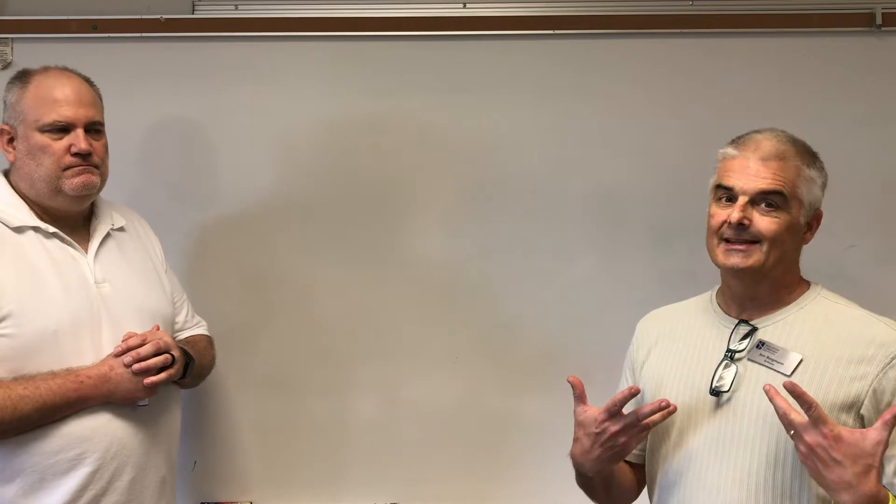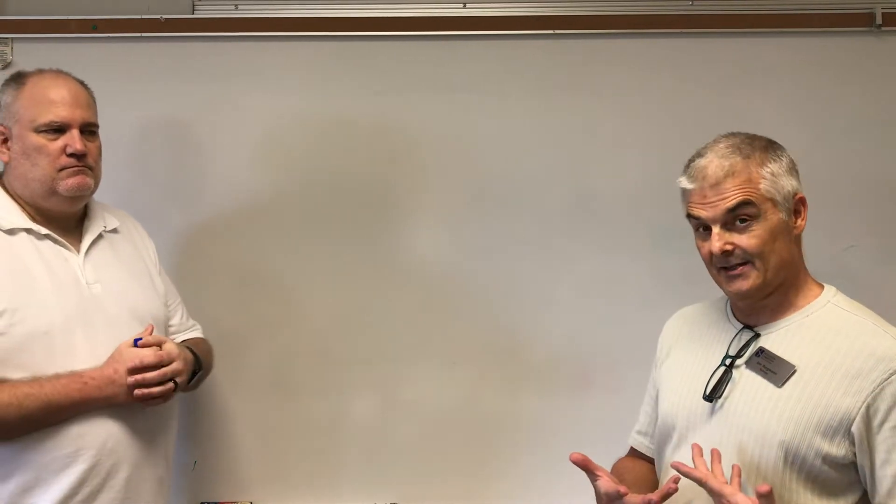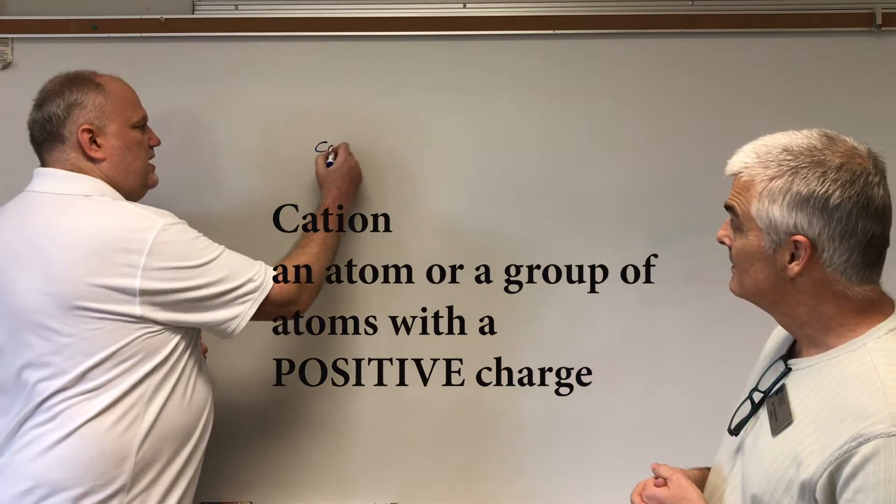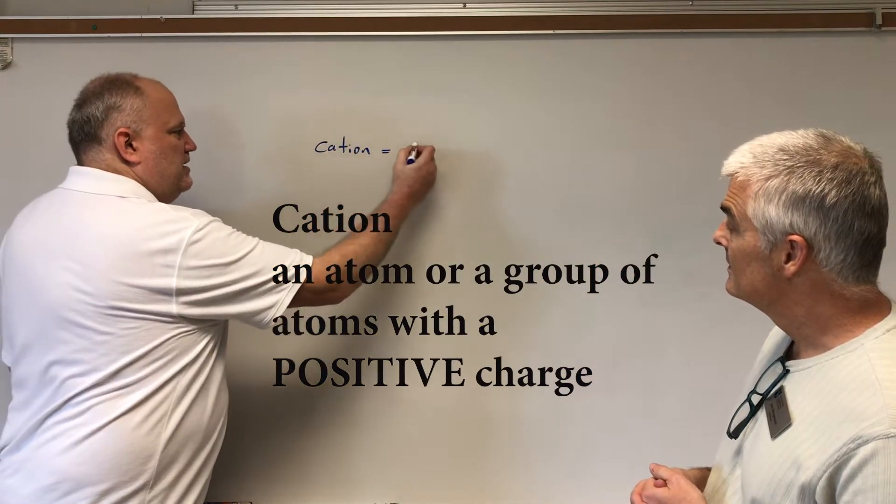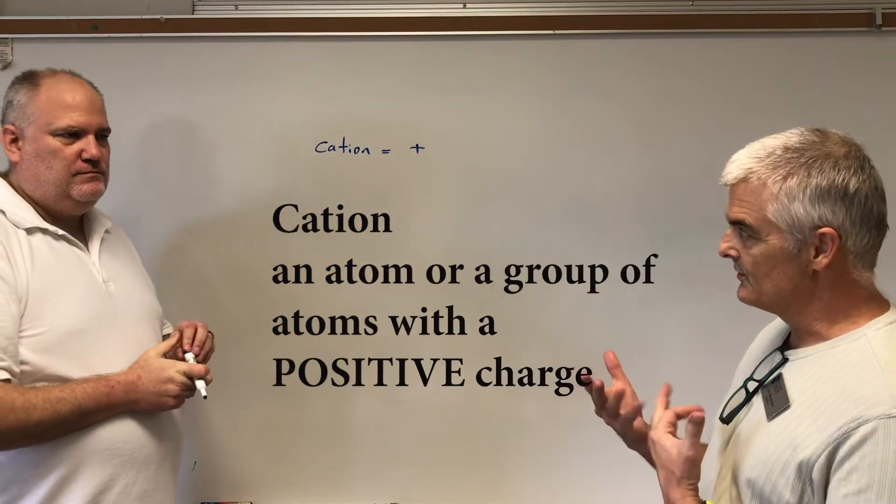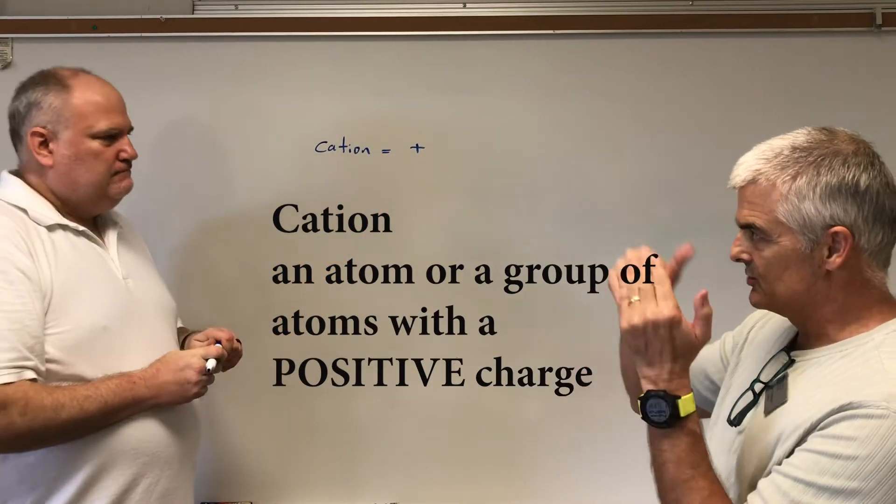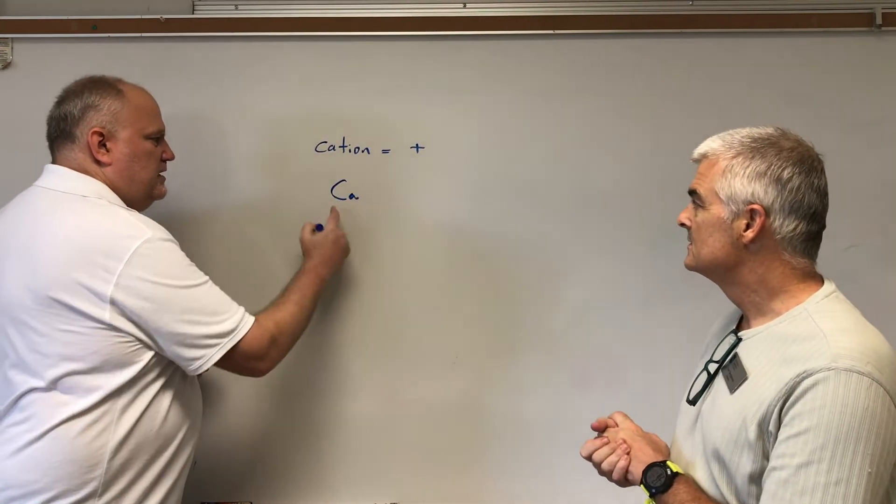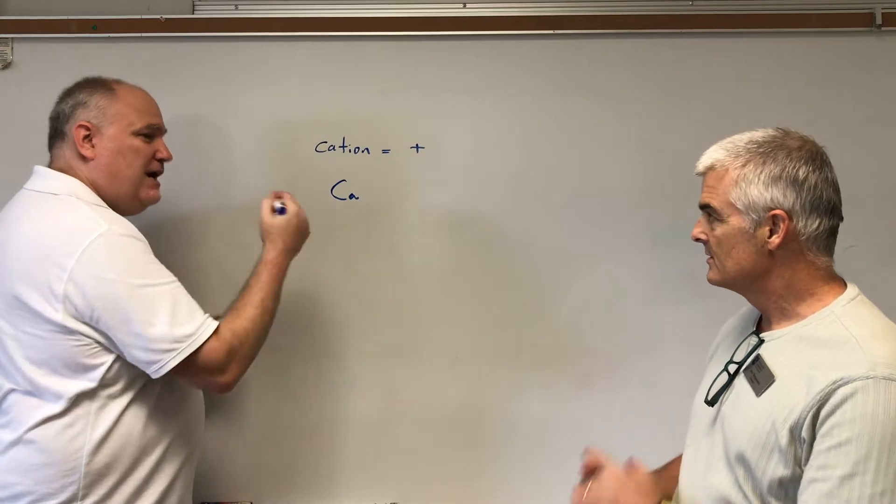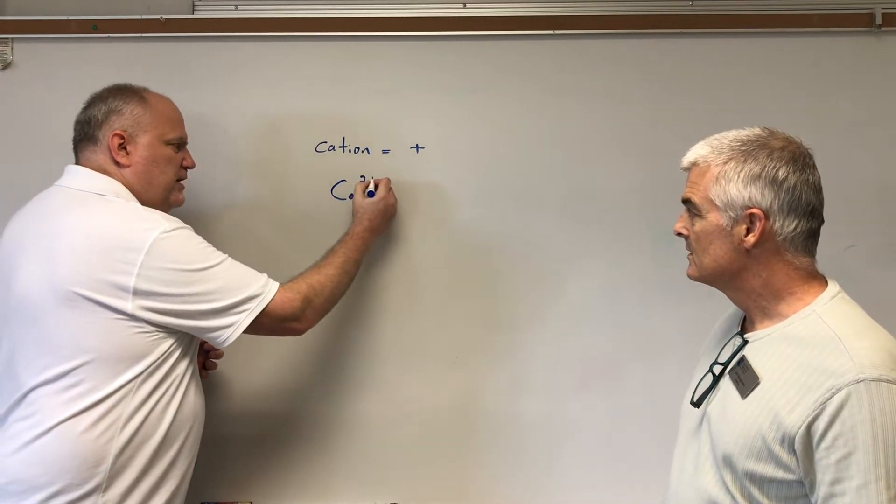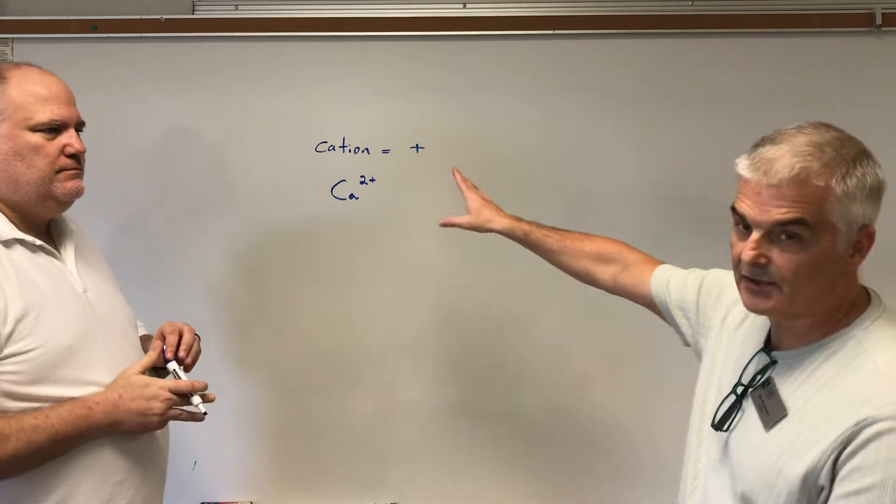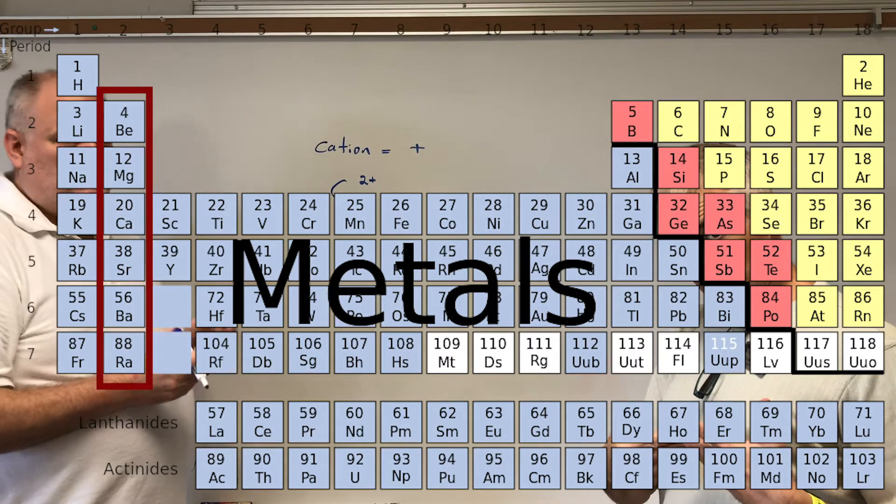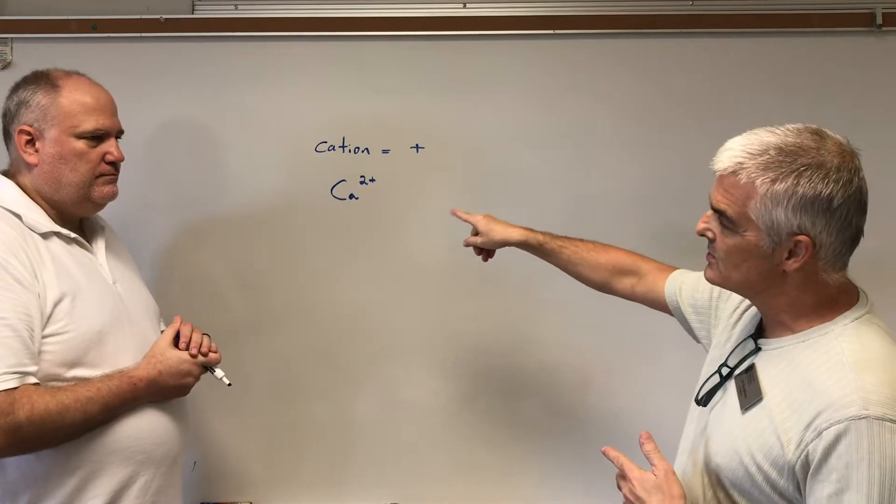First off, we have to understand the definition of something called a cation and an anion. A cation is an atom that has a positive charge. Anytime we have a cation, it has a positive charge. Let's have a calcium ion. So calcium, that's the formula for it. When we write the ion, what charge it becomes, we put the charge in the upper right-hand corner. I know the charge is two because he's in column number two. But you didn't write plus two, you write two positive.